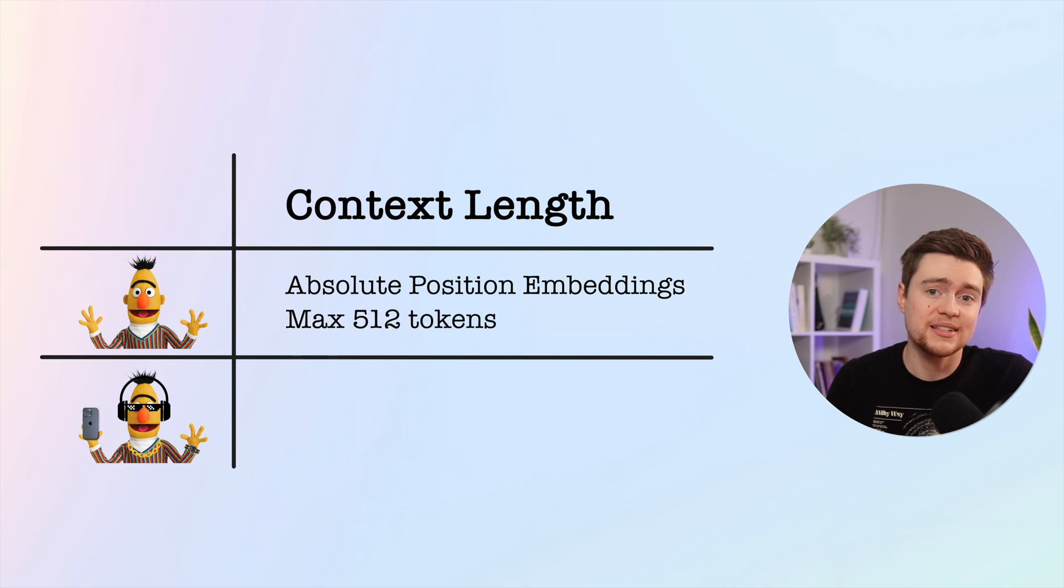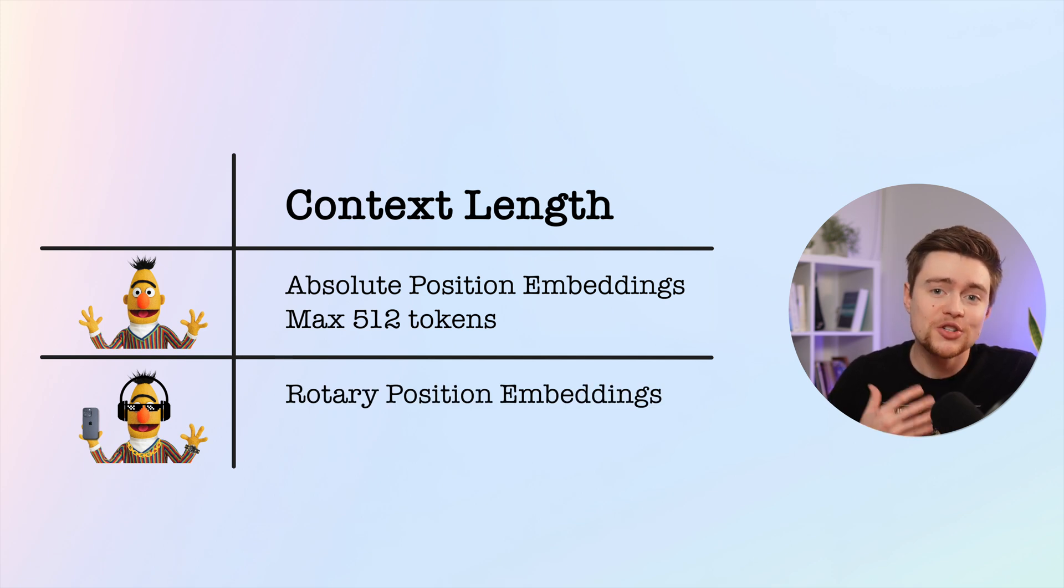Modern BERT uses something called rotary position embedding, which is a newer approach that has been shown to work well on both short and long sequences. They started the training on sequences with up to 1,000 tokens but then extended it to 8,000 tokens later during the training. That means the model natively supports the context of 8,000 tokens, which is 16 times more than BERT. Similar to models like DeBERTa, this limit is extendable, but performance can always degrade if you go beyond the natively supported sequence lengths.